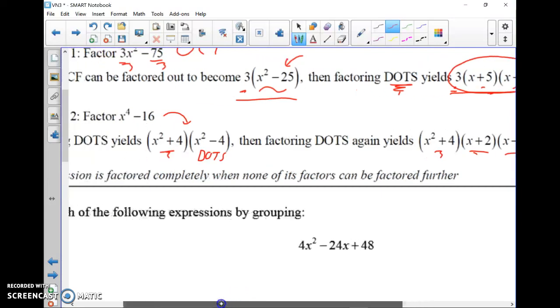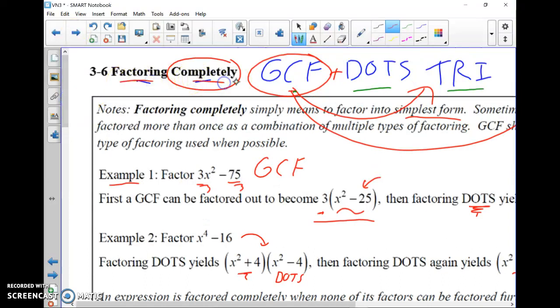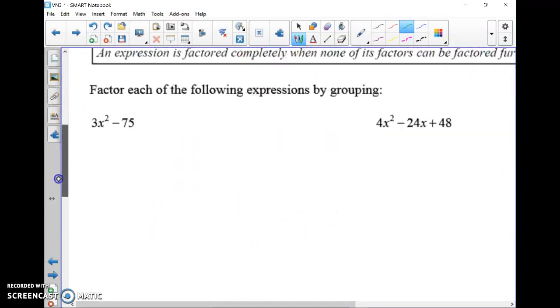So it was a multiple round DOTS factoring. And that's exactly what factoring completely is. So if you ever see directions that say factor completely, that's a big hint that you're likely going to have to do multiple rounds of factoring. It's probably going to be a GCF combination with something else or a DOTS a few times. Let's look at a couple examples.